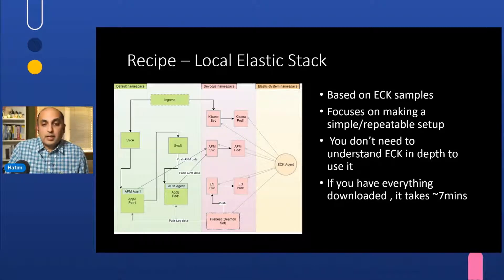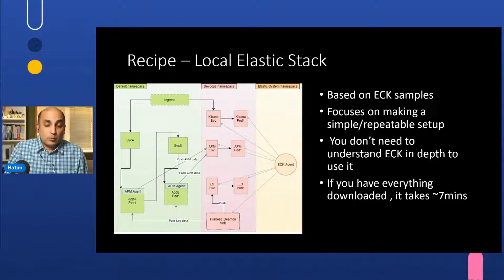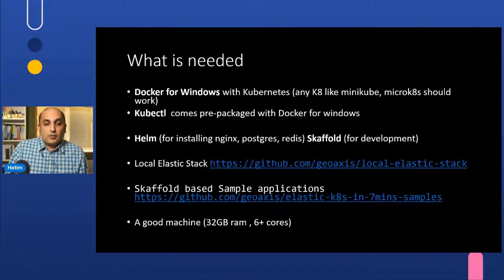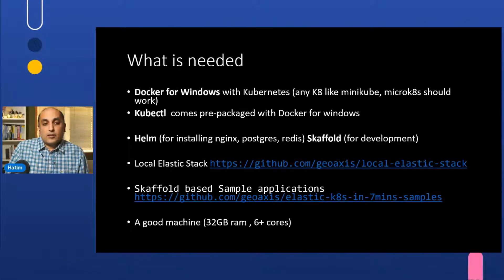It is best to have a reasonable internet connection and it will take around seven minutes from booting up Kubernetes to getting an ECK cluster. What you need is Docker for Windows or something similar like Minikube or MicroK8s, KubeCTL, Helm for installing Nginx, and for samples, Postgres and Redis.